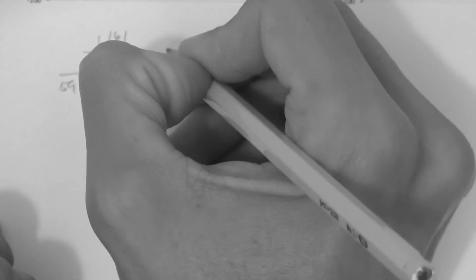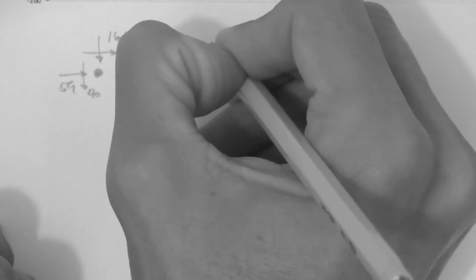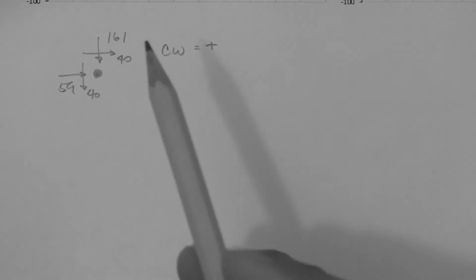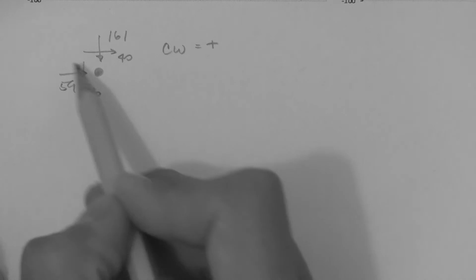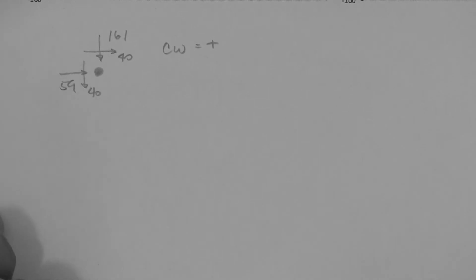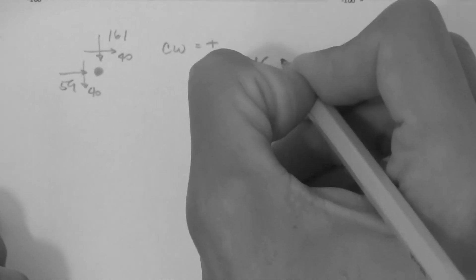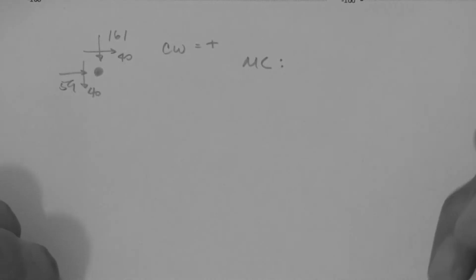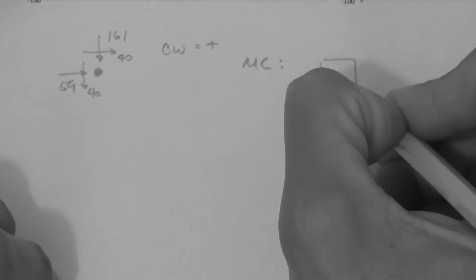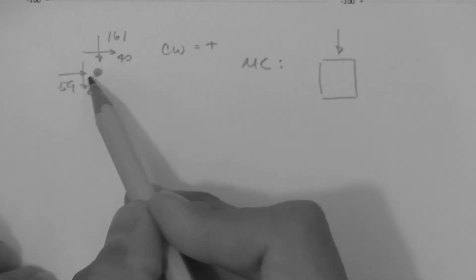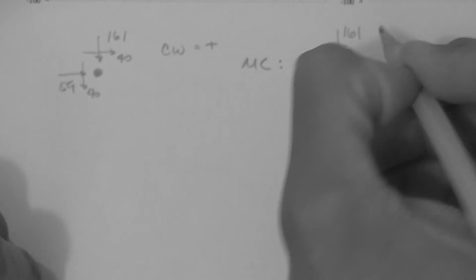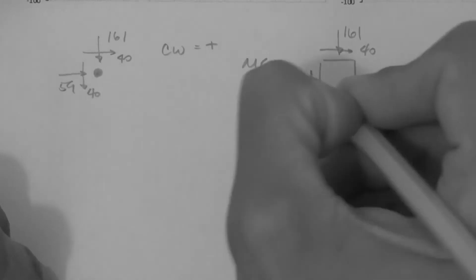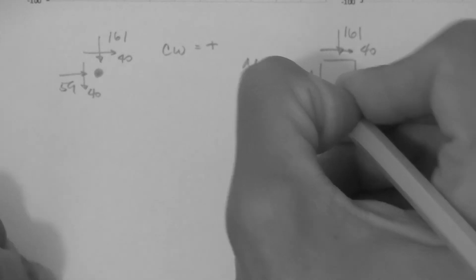Okay we're gonna say that clockwise is positive. Now we know the stresses that are acting on the horizontal plane and we know the stresses that are acting on the vertical plane, so we can draw the Mohr circle. Before we do that, what we're gonna do is redraw our point like this. We just make it bigger. Okay so 161, 40, 40, and this is 59.